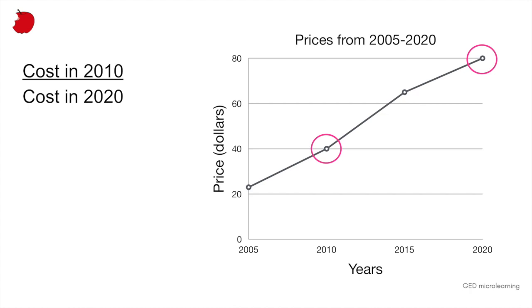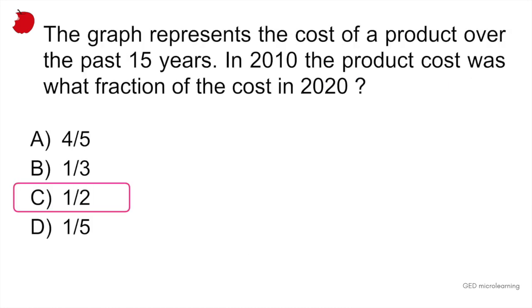So if we want to know the fraction of the cost, what we would do is take those two values, the value of $40 for 2010 and the value of $80 in 2020, and that gives us one half. So the cost of the product in 2010 was one half of what it cost in 2020. Your answer is C.